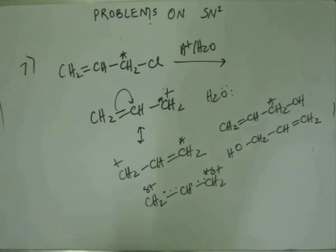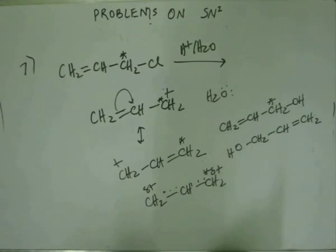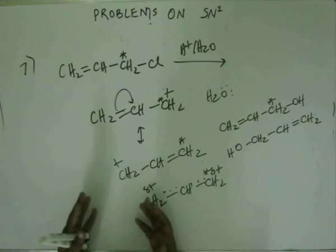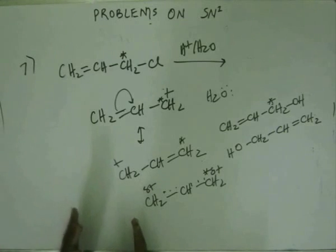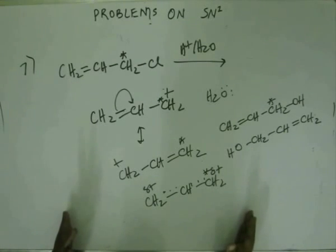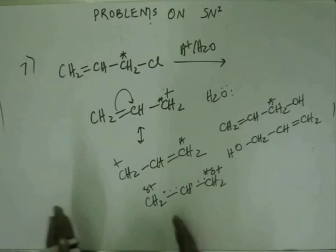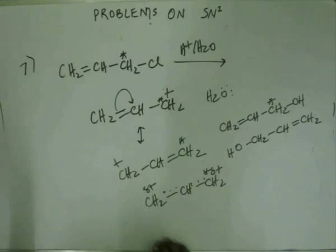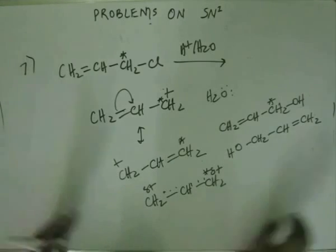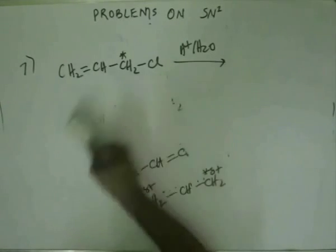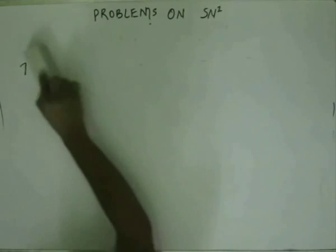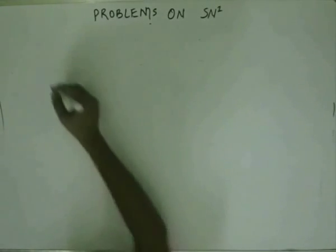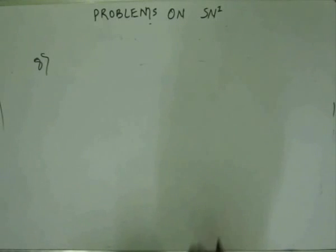From here, we will build on another factor: rearrangement. Rearrangement here will be a kind of revision because we have already studied it. But just to brush up and show you why we studied rearrangement and how to apply it when dealing with SN1 — in SN1, we have the formation of a pure carbocation, so we have to worry about rearrangement.